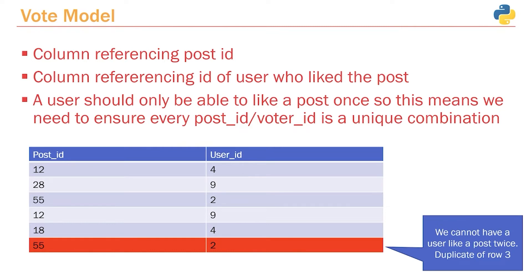Keep in mind, if you wanted to do an upvote/downvote type thing like Reddit does, you might want a third column for the direction of your vote. But we're going to keep this nice and simple — just a one-directional like system. The most important thing about the vote table is that since a user should only be able to like a post once, we need to ensure that every post ID and voter ID is a unique combination.